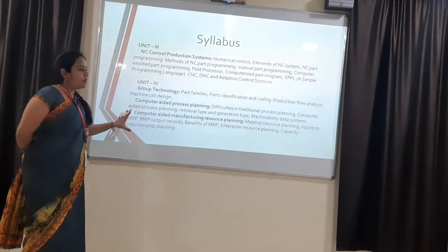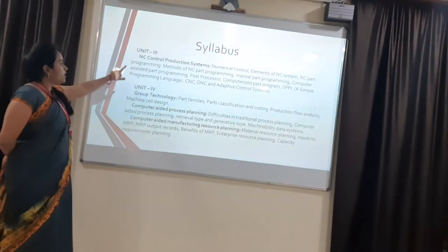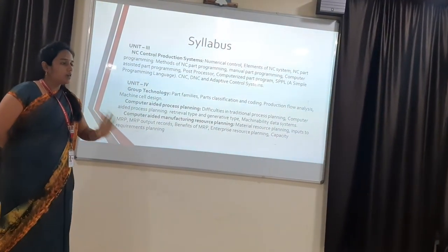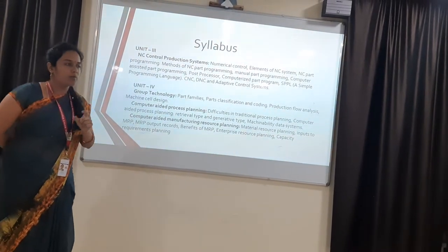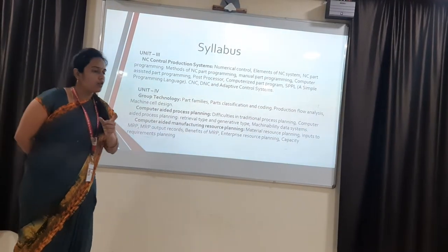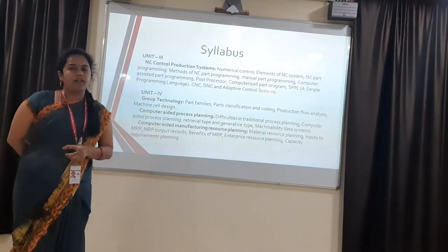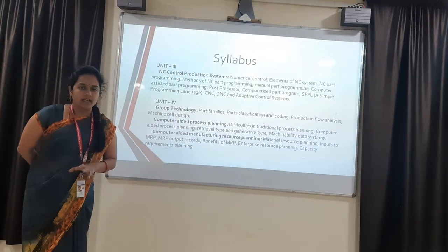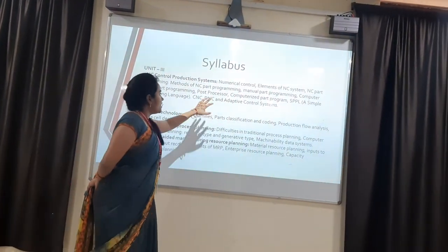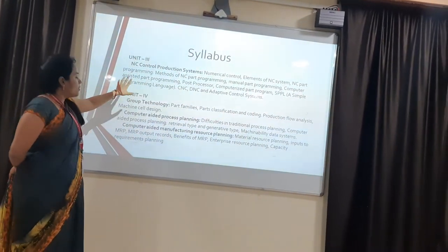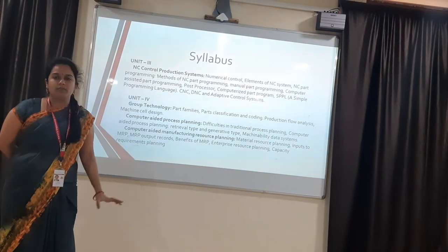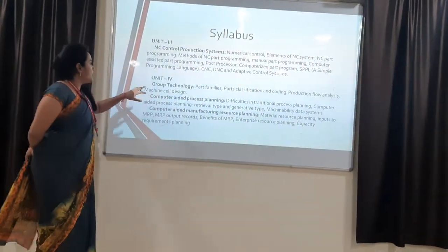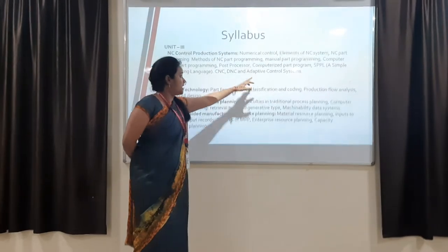From the third to fifth unit, we will be studying manufacturing. In the third unit, numerical control — how the design is changed, every movement of the tool is converted into numerical control code, used in the manufacturing process. How machine tool movement takes place and how the final product is attained will be studied. NC elements and part programming will be done, and we will see CNC, DNC, and adaptive control systems. In CNC, one computer controls a single machine; in DNC, more than four machine tools are controlled by a single central processing unit.